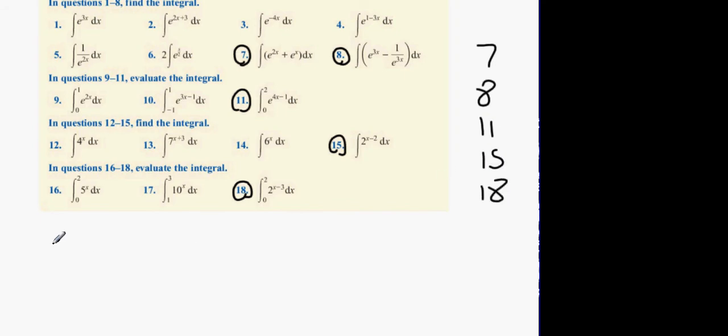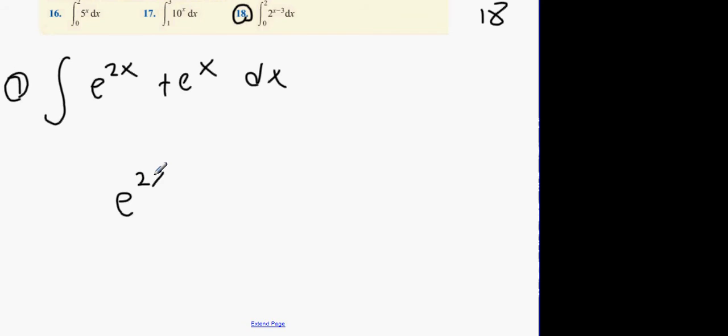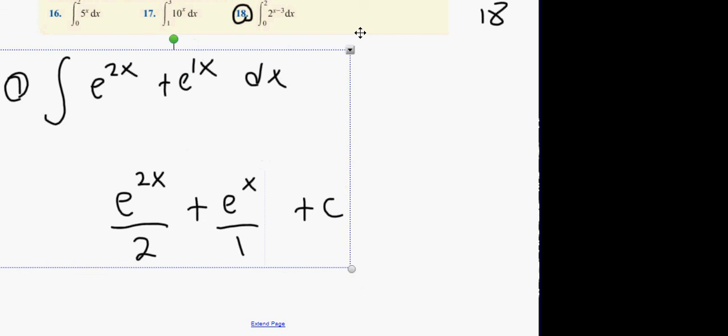So in question 7, we have the integral of e to the 2x plus e to the x dx. Now what do we remember about this one? Power never changes. Power never changes. What's on the bottom? Derivative of the power. Power never changes. Derivative of the power. That's it. So that's question 7, done extremely efficiently.